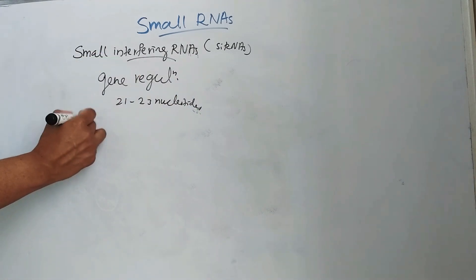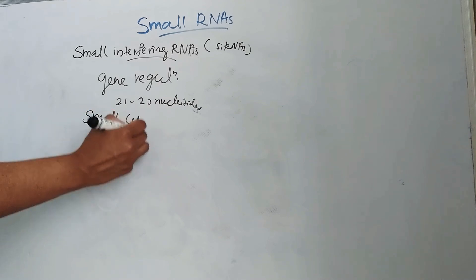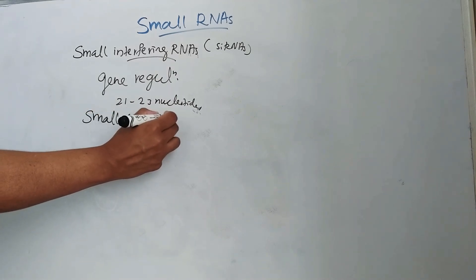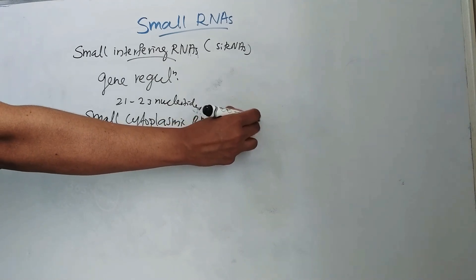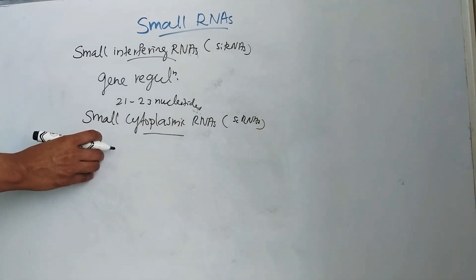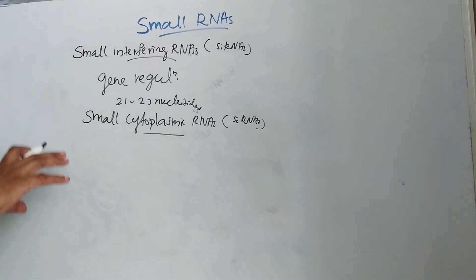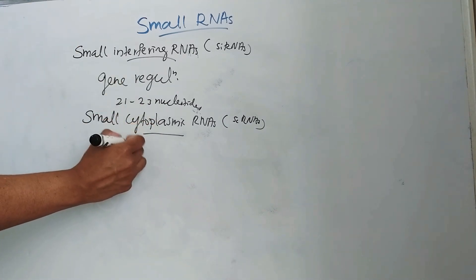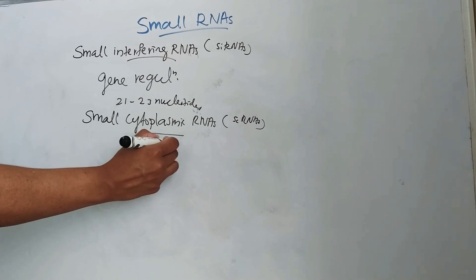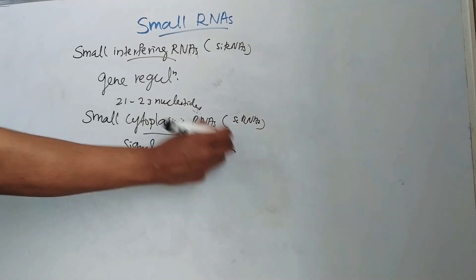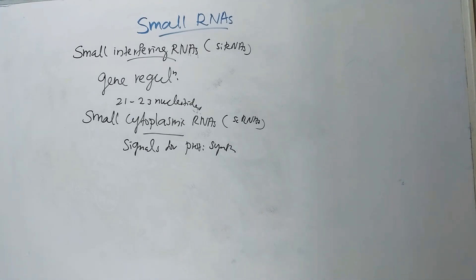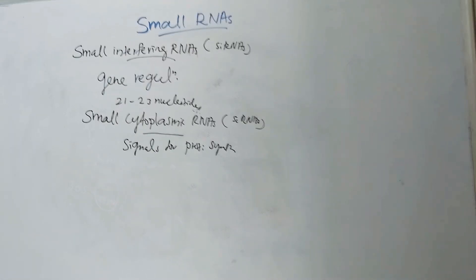Next one is small cytoplasmic RNAs or scRNAs. These recognize the signals for protein synthesis — that is the function of small cytoplasmic RNAs. So these are the small RNAs discussed today. Thank you for watching.